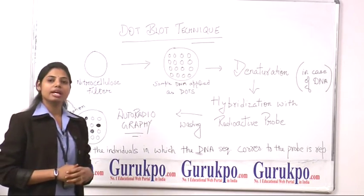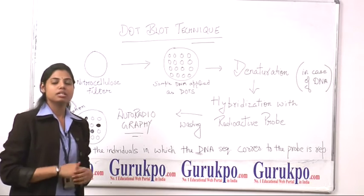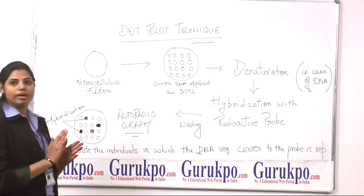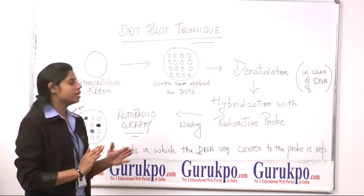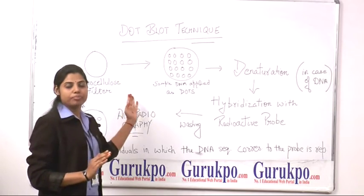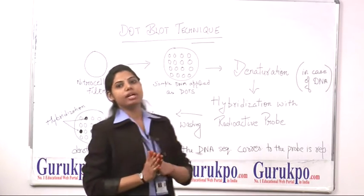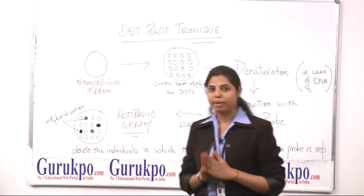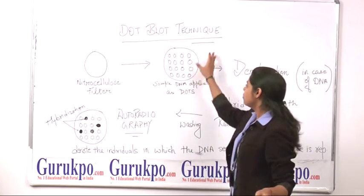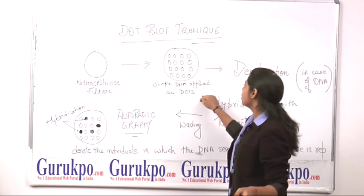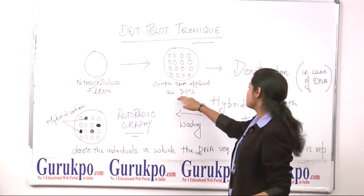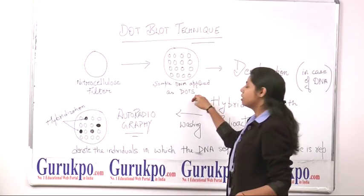In this technique, the sample is going to be fixed on the nitrocellulose filter. These filters are then baked so that the sample is fixed on these filters as dots.